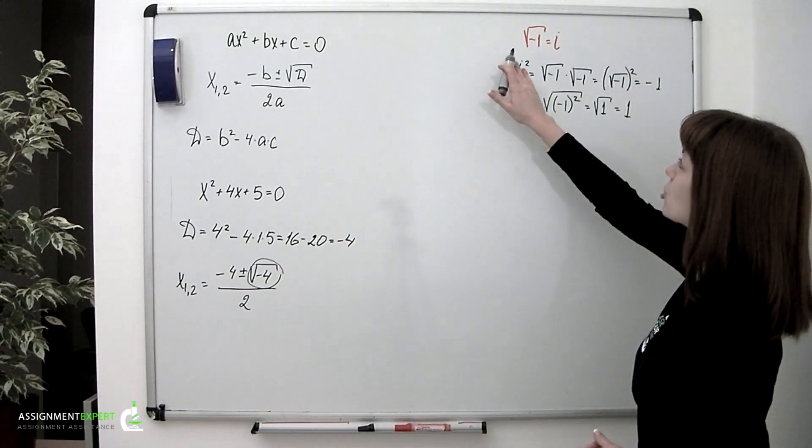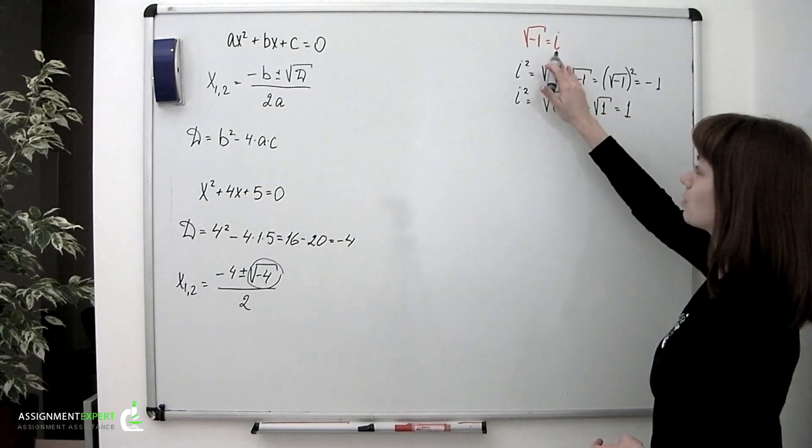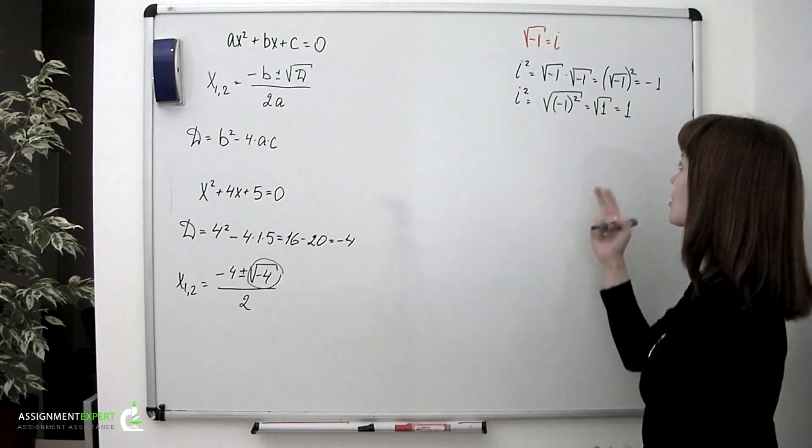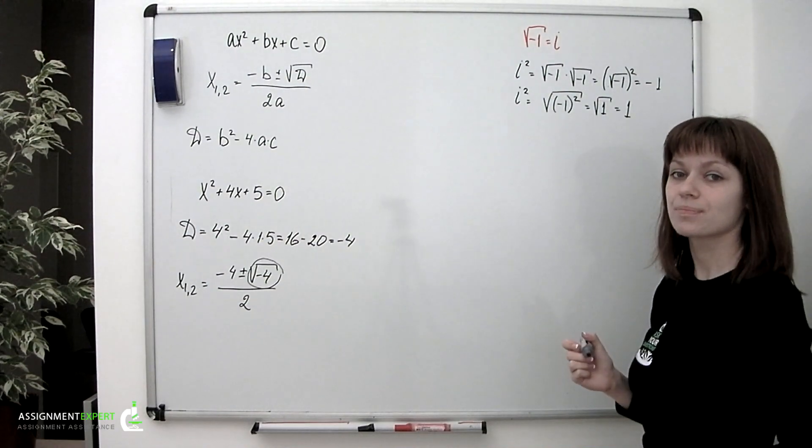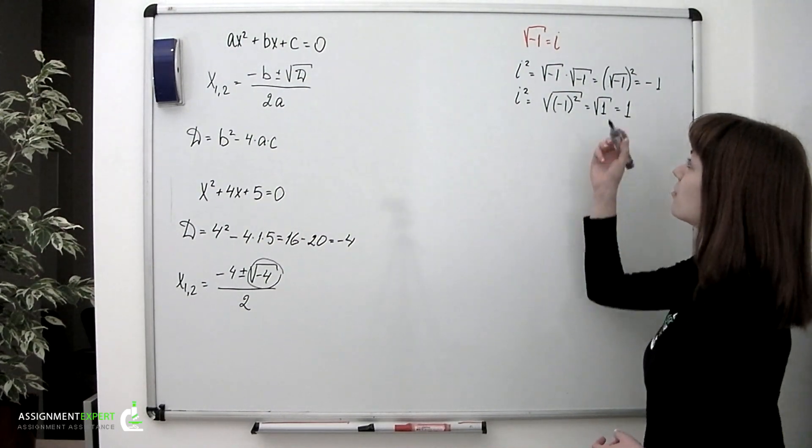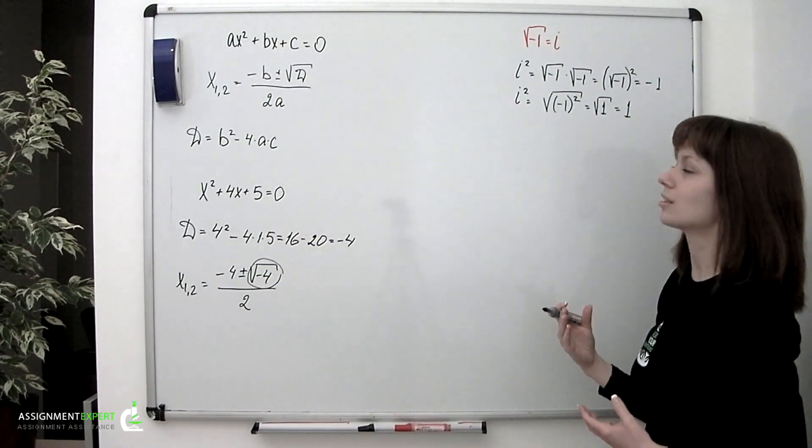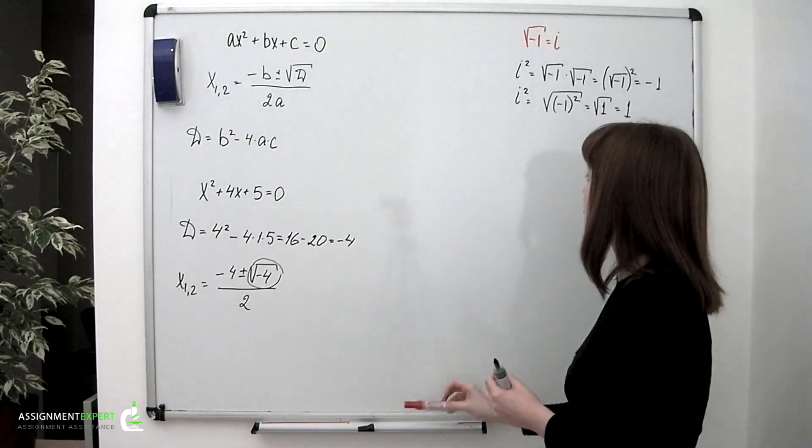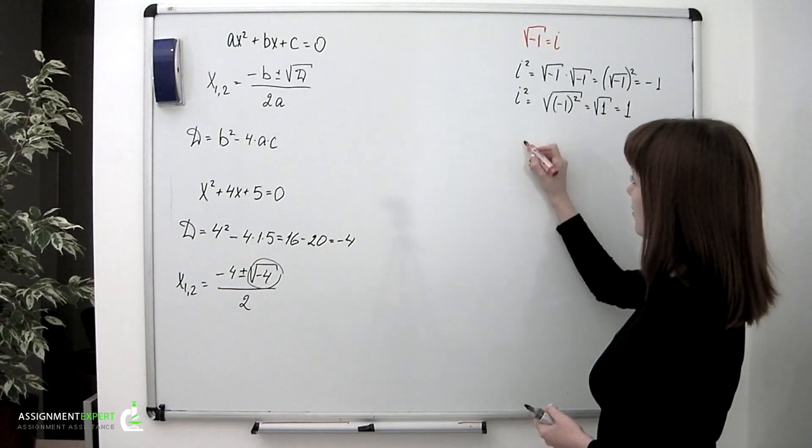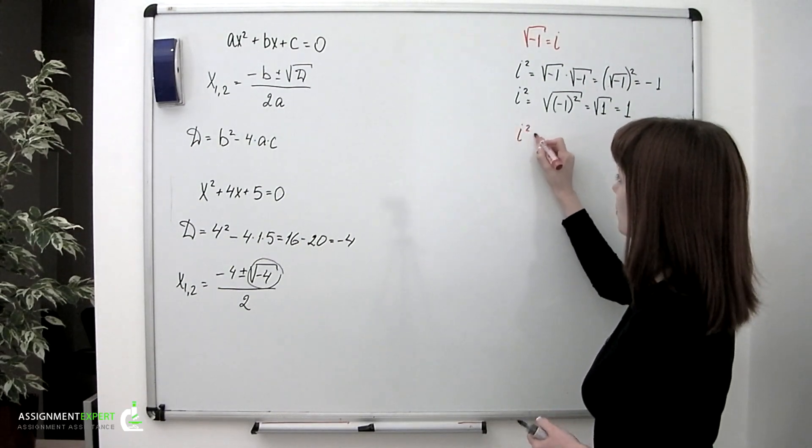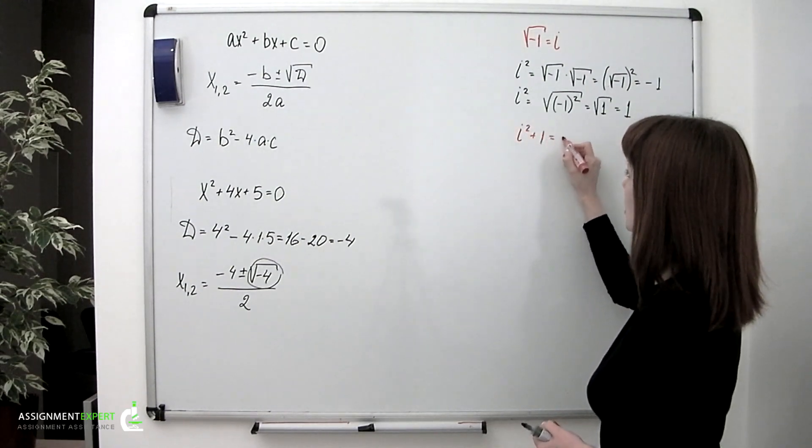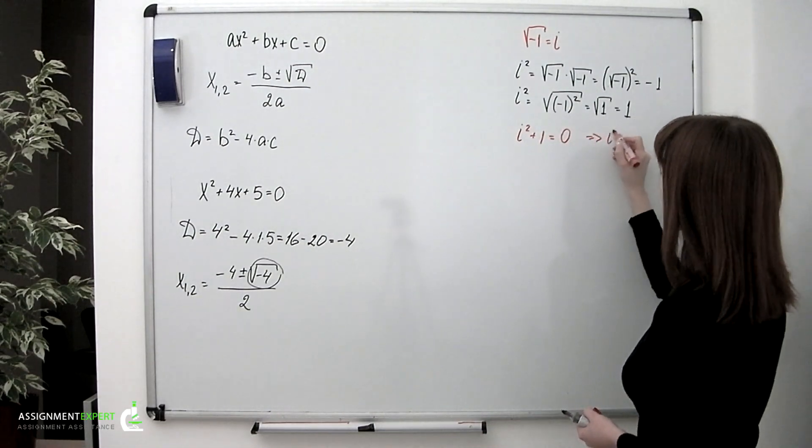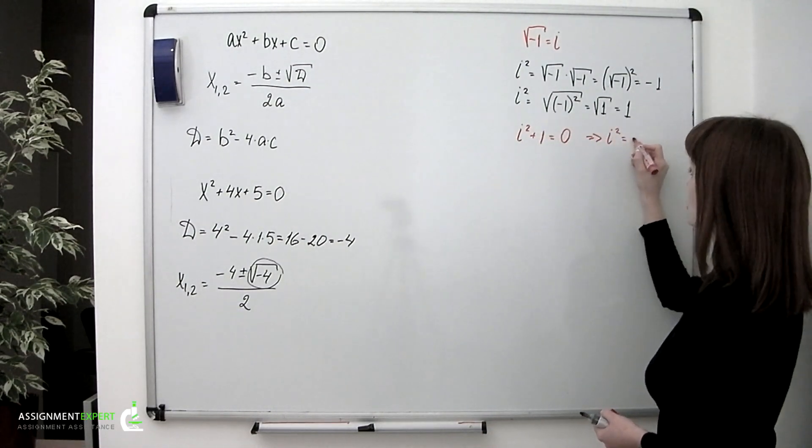In fact, notation √-1 = i is old-fashioned and not widely used since it causes such misunderstandings. It was only used for simplification and getting acquainted with the concept of i. Now the proper definition of i is the following: i² + 1 = 0, and therefore i² = -1.